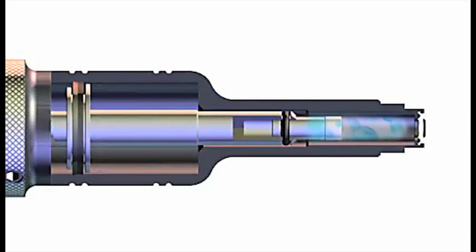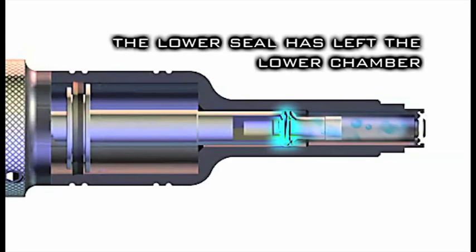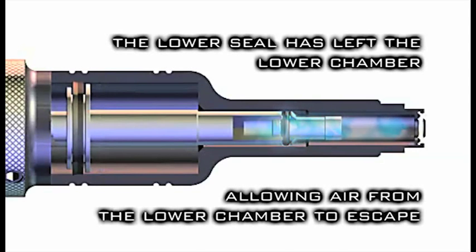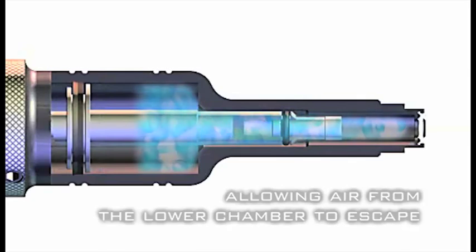When the lower piston seal disengages from the lower chamber, the air can then bypass this seal and move into the upper chamber of the body.